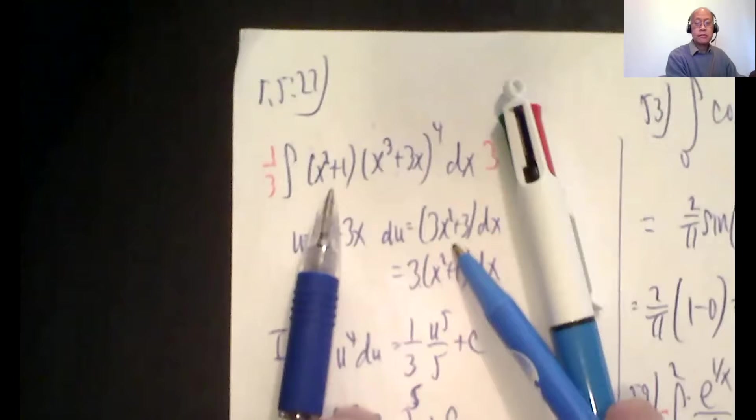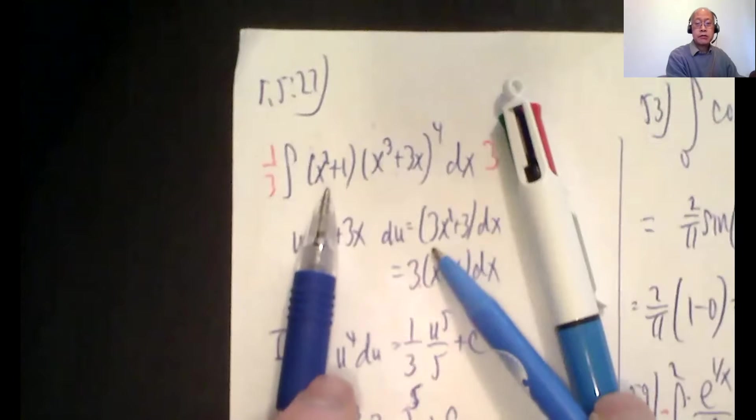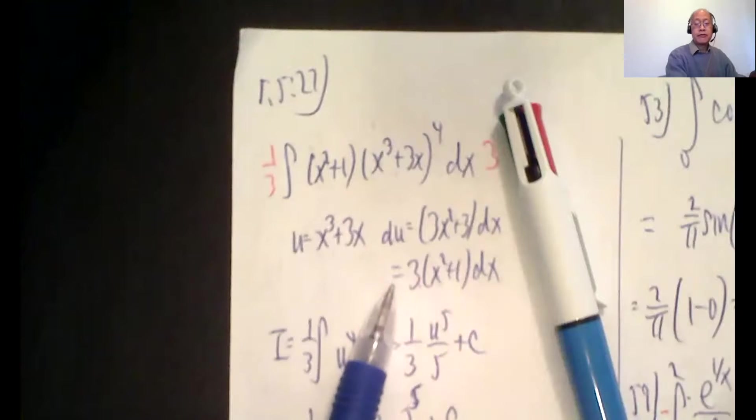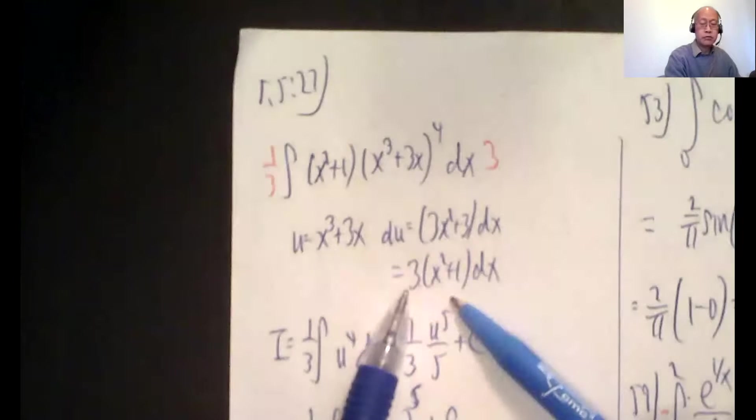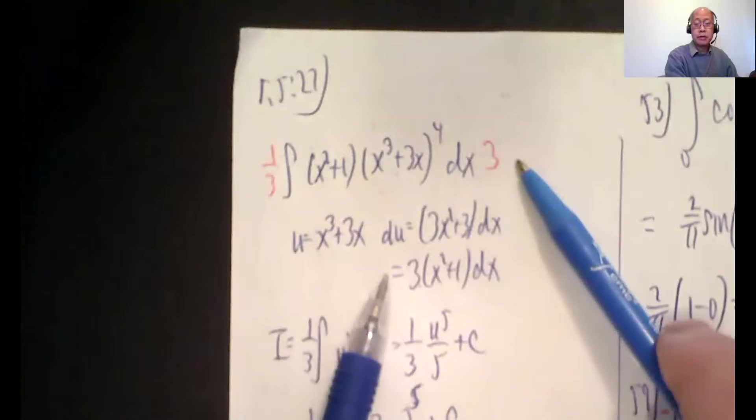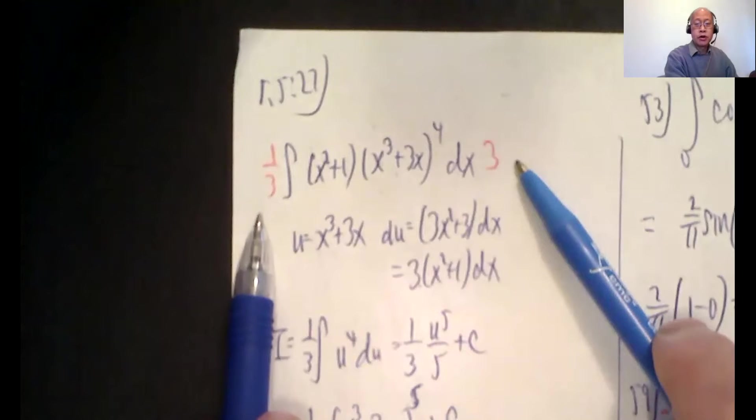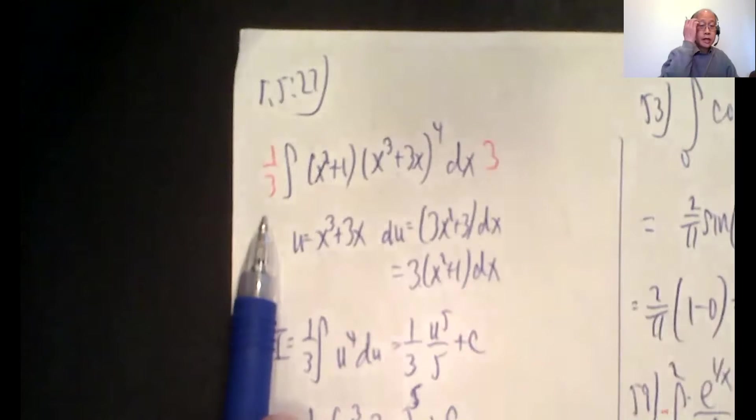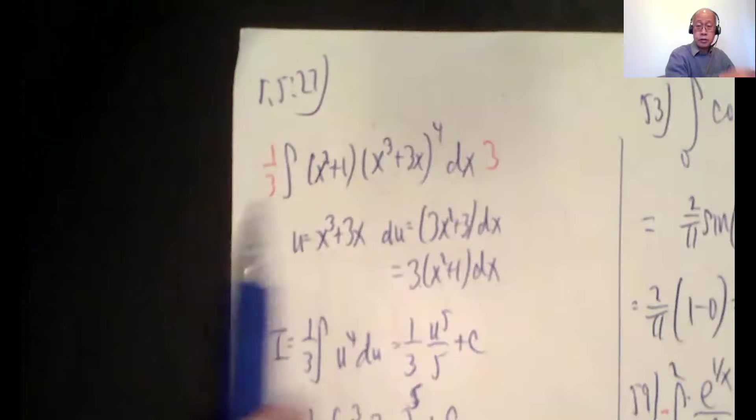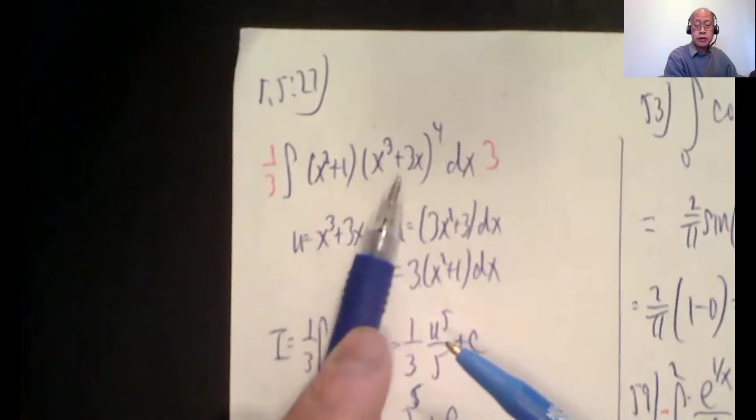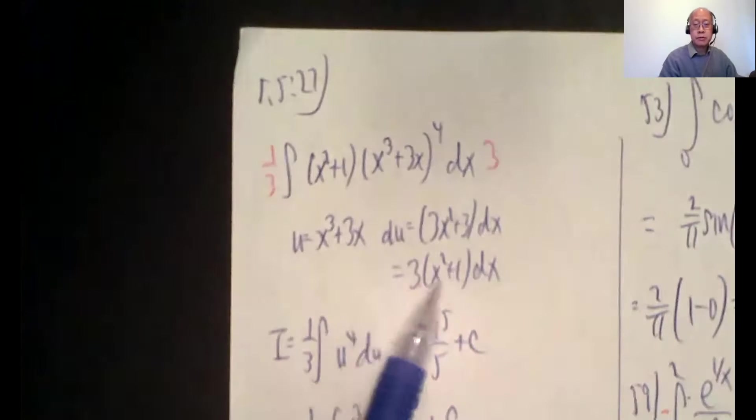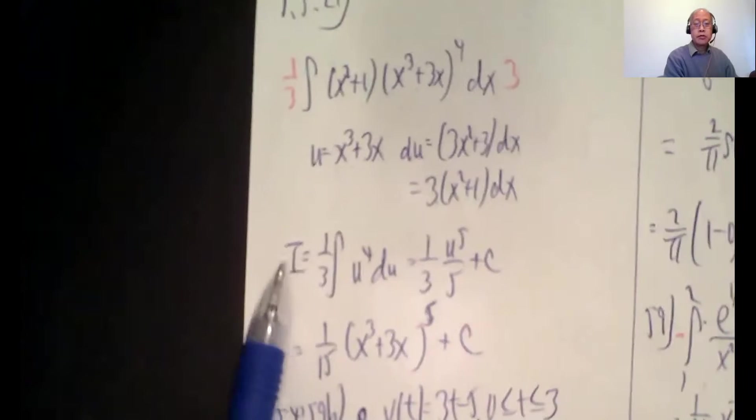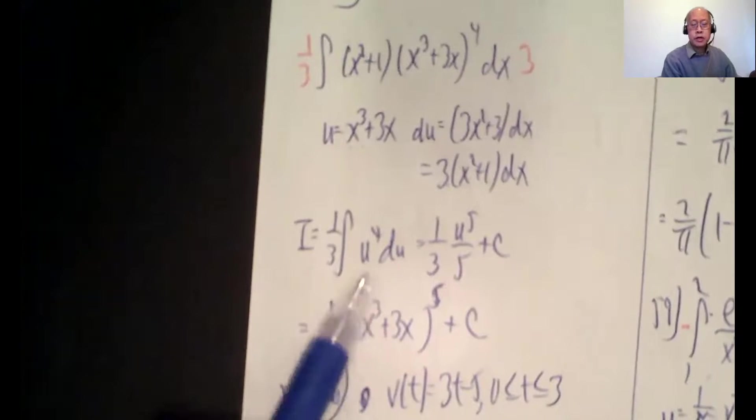3x squared plus 3 dx. But look at what I have. x squared plus one. This is 3x squared plus 3. Yeah, but if I factor out the 3, this is 3 times x squared plus one dx. So that tells me to multiply by 3 inside and one-third outside. So the next step, this is going to be one-third. This is u to the fourth. Then 3x squared plus one dx. That's my du. So one-third integral of u to the fourth du.